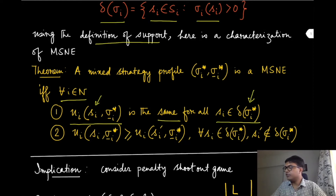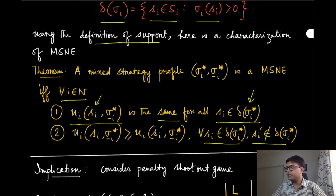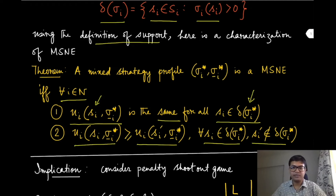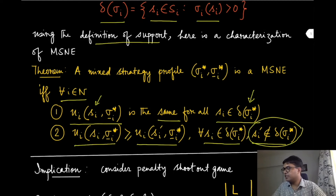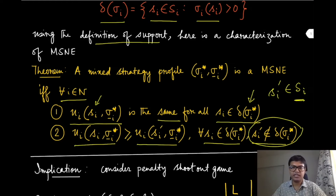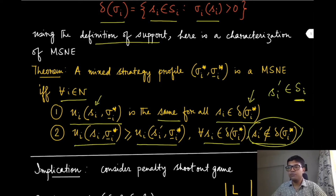The second condition: if one strategy s_i is inside the support and another strategy s_i' is outside the support, then the expected utility of the strategy inside the support must be at least as much as the utility of the strategy outside the support. A more concise statement would replace the second condition by ranging s_i' over all of S_i, which subsumes the first condition — since for strategies inside the support the inequality holds in both directions, forcing equality. But I have written both conditions separately for ease of understanding.